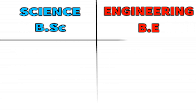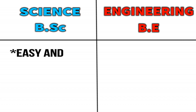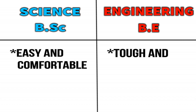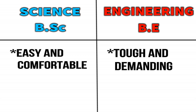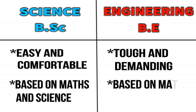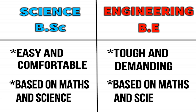In terms of difficulty, science courses are comparatively easy and comfortable, while engineering is a bit tougher. In both science and engineering courses, the two main subjects are science and maths — those are the basic core subjects for both.